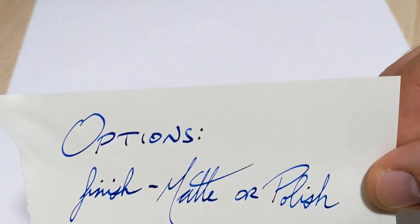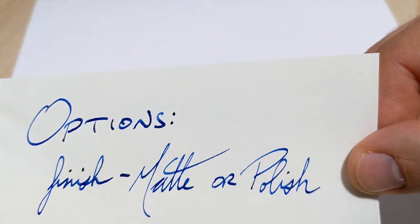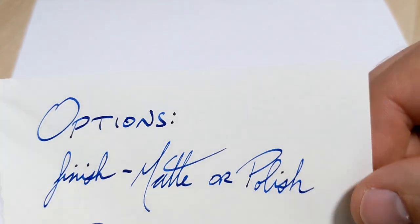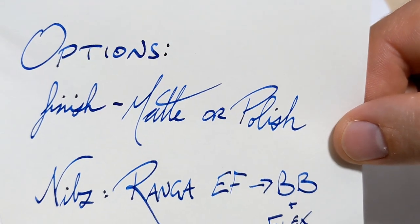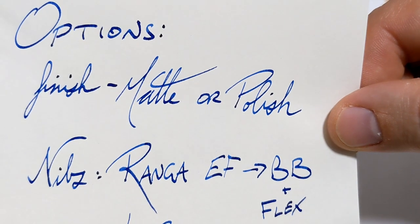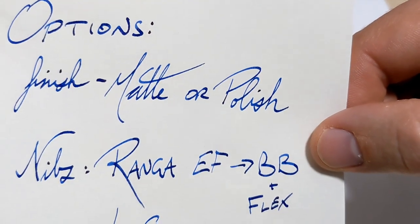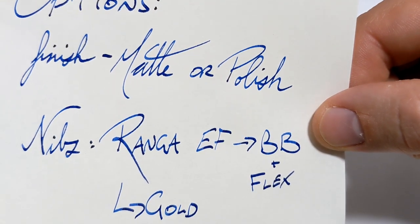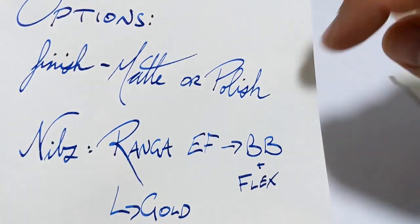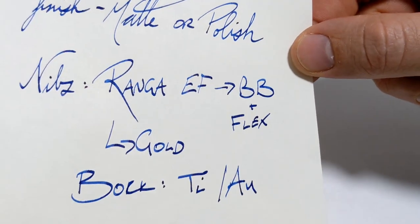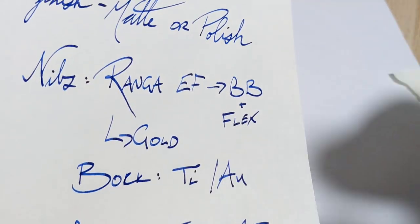So what are the options? Looking at the finish, you can go matte or polish. And the nibs, Ranga, you can do extra fine all the way through double broad and a flex. And they got the same thing in gold options, monotone, two-tone, whatever you want.